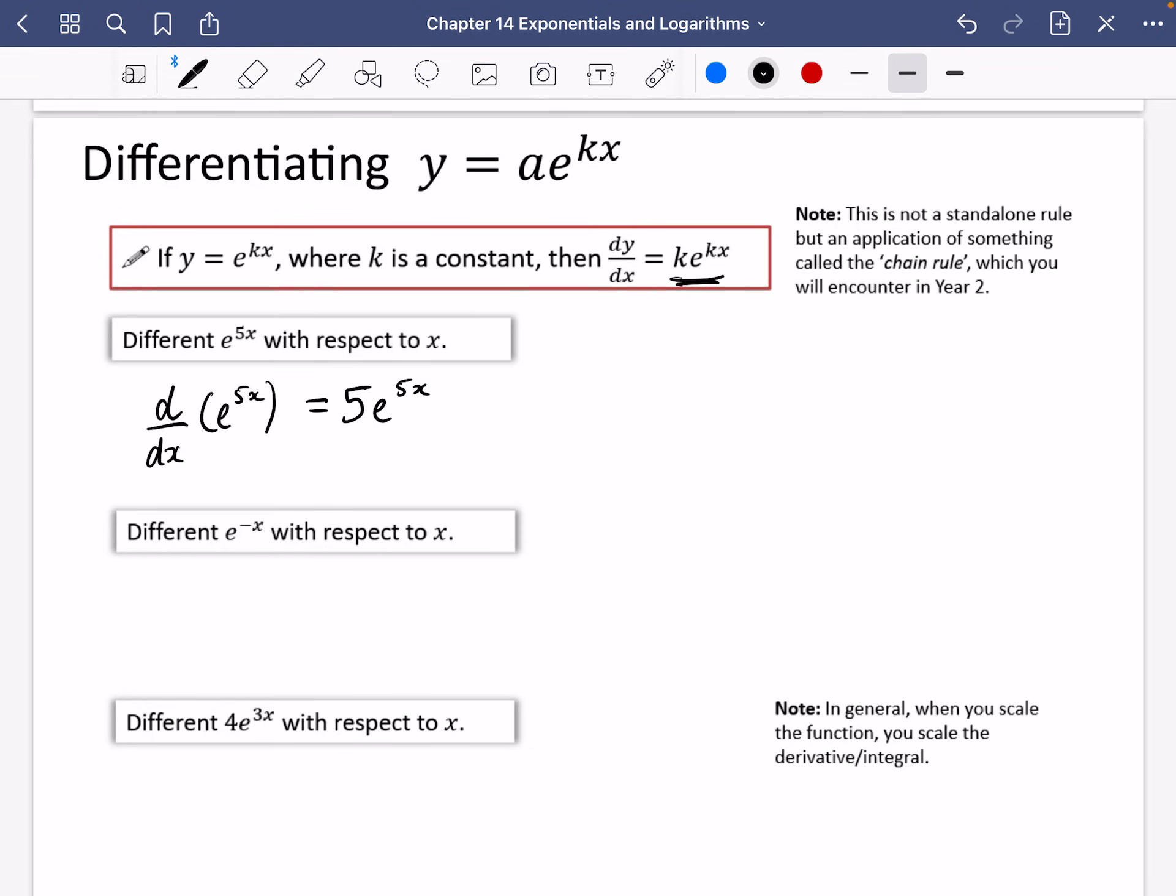Now for the next one, I haven't actually, I've written different here, this should say differentiates, I've written that wrong each time, differentiate, not different, but differentiate each time that should say. This time I want to differentiate e^(-x) with respect to x. So really, when I'm trying to differentiate this with respect to x, this is actually e^(-1x). So when I differentiate that with respect to x, I will multiply by -1 at the beginning, and I will have e^(-1x). But we never really write it like that, do we? We would just write -e^(-x), okay?